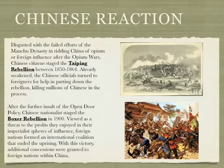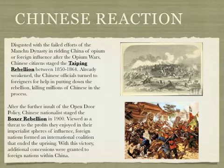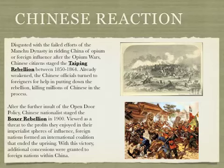The Chinese were very upset, and there are a couple of responses we see. This is just an overview and we'll get deeper into this in class. Disgusted with the failed efforts of the Manchu dynasty in ridding China of opium or foreign influence after the Opium Wars, Chinese citizens staged the Taiping Rebellion between 1850 and 1864. Already weakened, Chinese officials turned to foreigners for help in putting down the rebellion, killing millions of Chinese in the process.